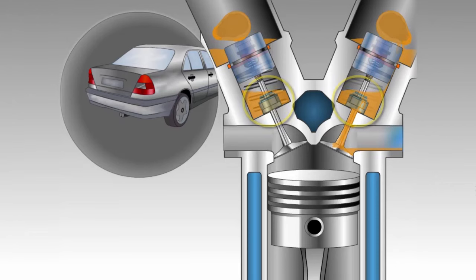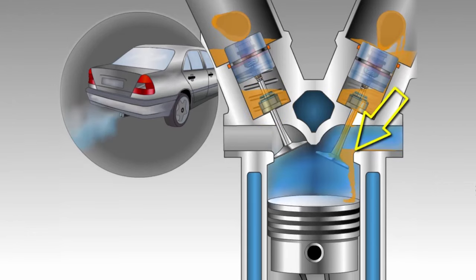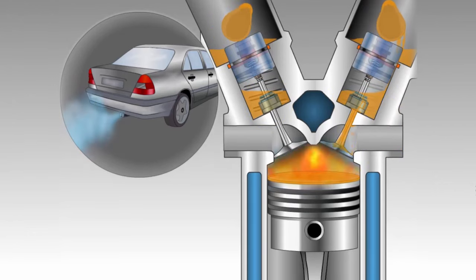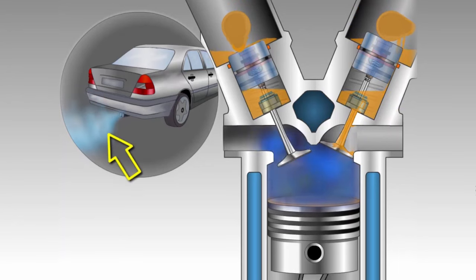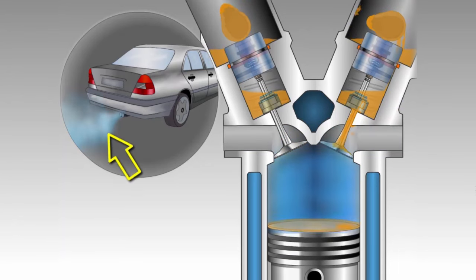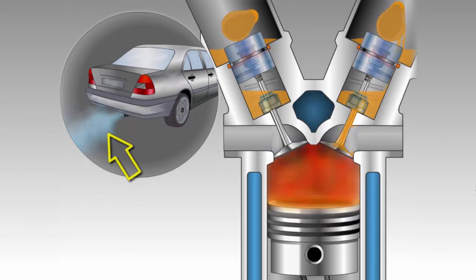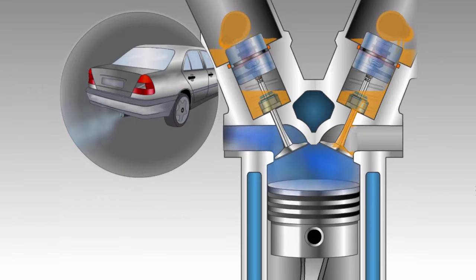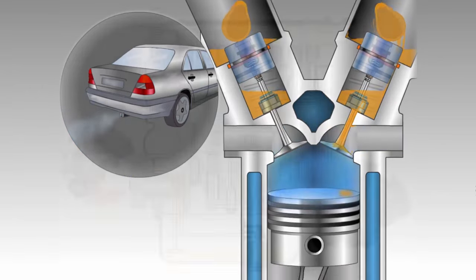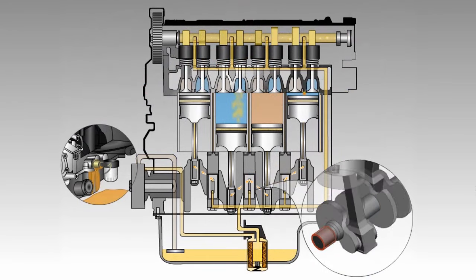Valve guide seals surround the intake and exhaust valves and keep oil from leaking inside the combustion chamber. A common symptom of a leaking valve guide seal is a plume of blue smoke coming from the exhaust when the car is started. This is a result of the leaking oil being burned in the combustion chamber.